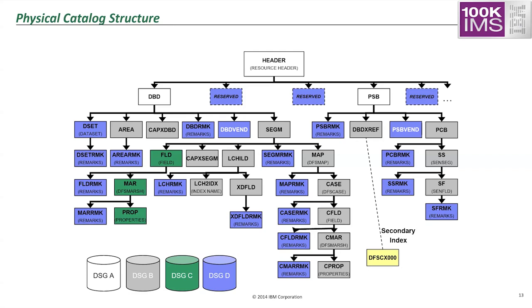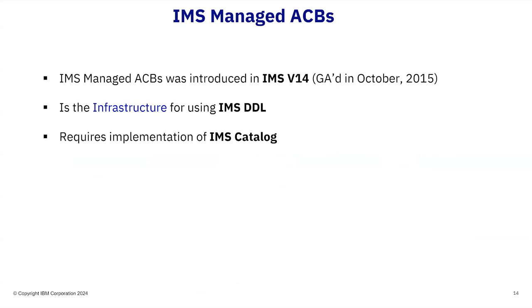Some active segments that you use a lot go into one dataset, others that you don't use as much go in another. This was the reasoning behind having multiple dataset groups for the catalog. I can honestly say that while this design was initially done, we didn't do an even distribution of the segments — there are some datasets, for example dataset group C or B, that are more populated than the others. IMS managed ACBs was introduced in version 14 GA in October 2015. IMS managed ACBs is the infrastructure for using IMS DDL, and when you implement IMS managed ACBs you must also implement the catalog.